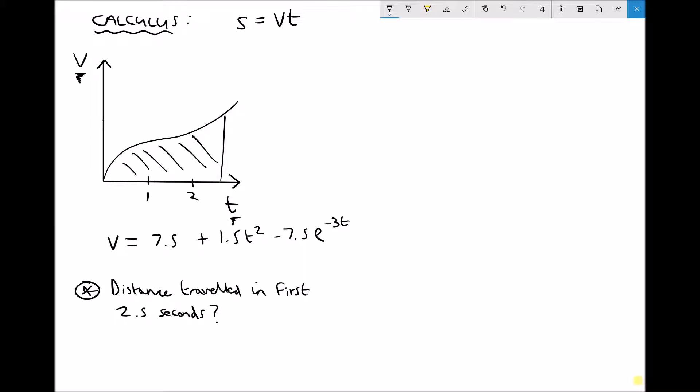Well when we need to find areas under functions, what we need to do is integrate the function with respect to time. So we have our function for v here. But what we want to do is find the integral of v with respect to time. That will give us velocity times time.